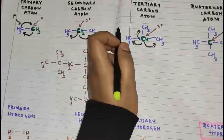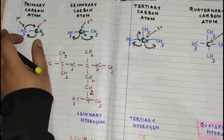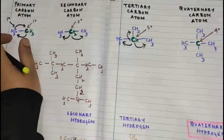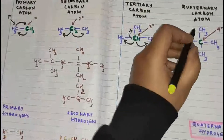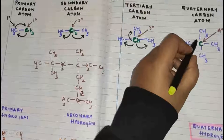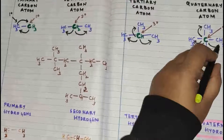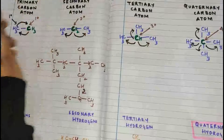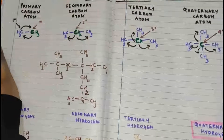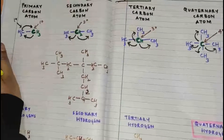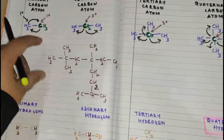That is the reason why we call it a tertiary carbon atom. Then quaternary carbon atoms — you will be able to guess it now. The carbon atom which is attached to one, two, three, four carbon atoms is called a quaternary carbon atom.